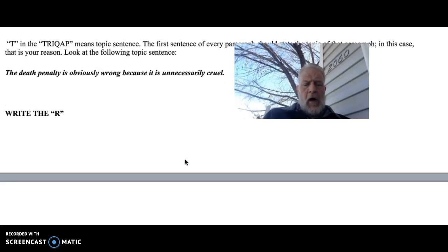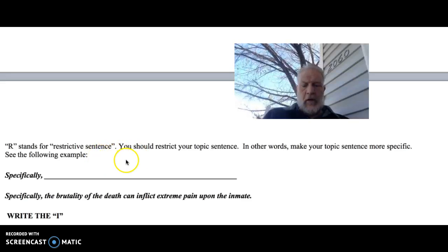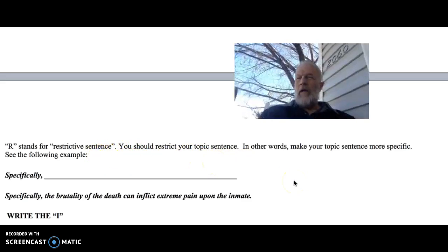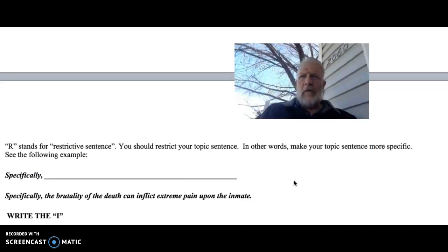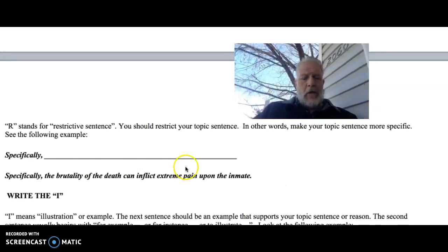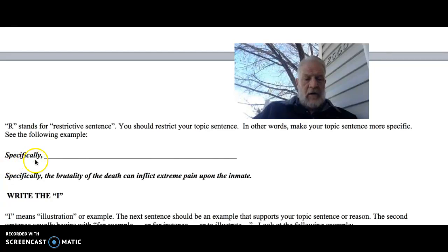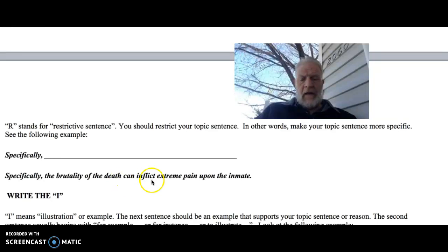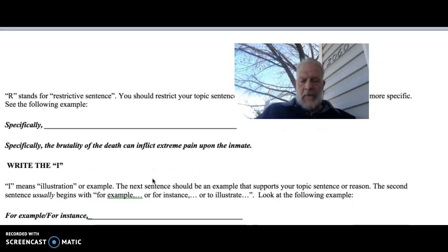Then you would write the R. And what that means is it stands for restriction. You should restrict your topic sentence. In other words, you don't want to make it so broad that you don't have the research to back it up. You would use this particular transition. Specifically, so you would say something like, specifically, the brutality of the death can inflict extreme pain upon the inmate.